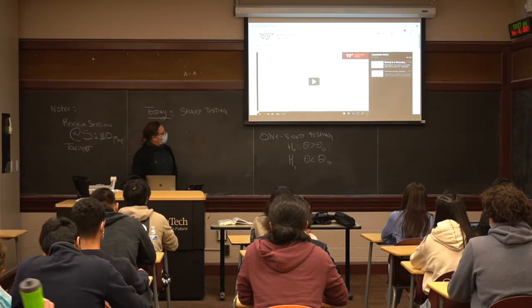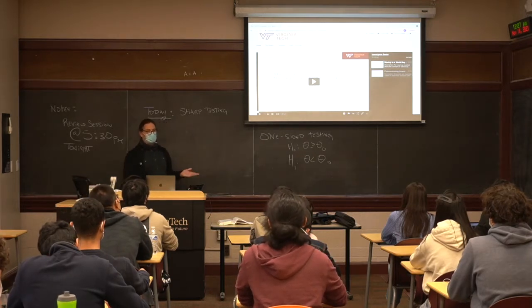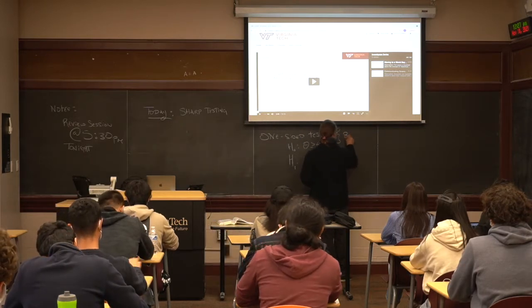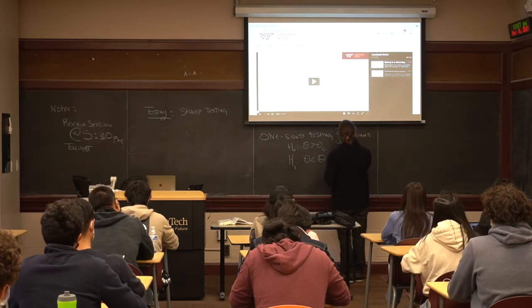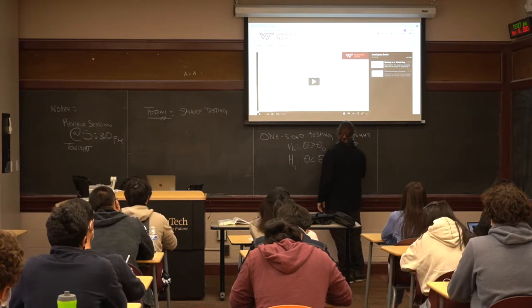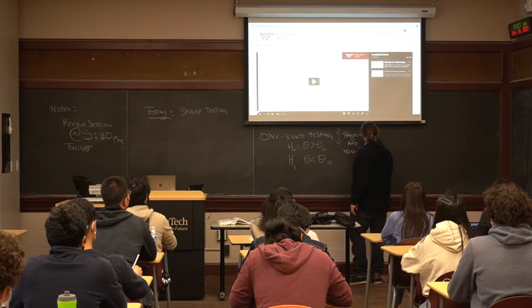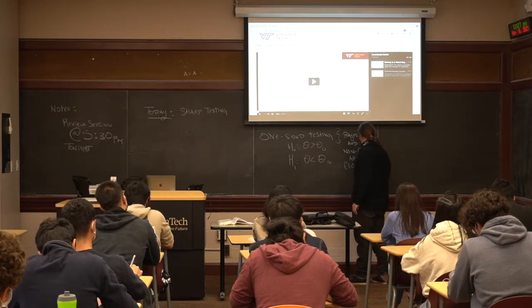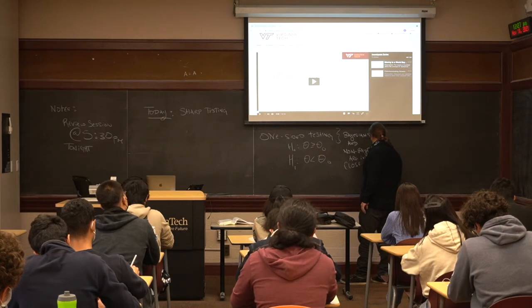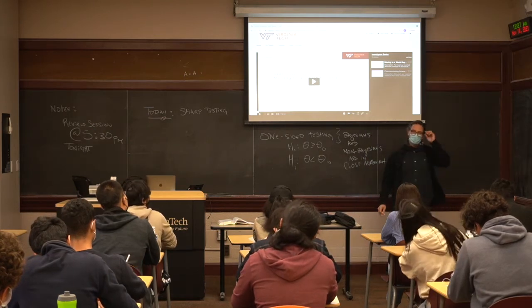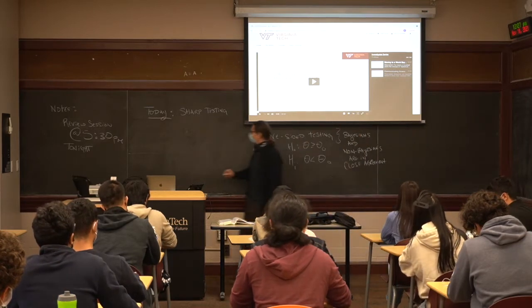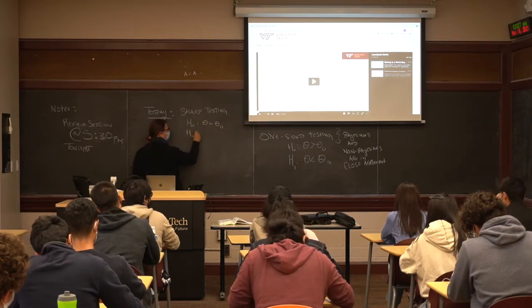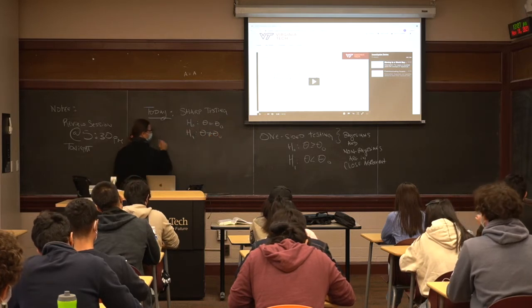There's been a lot of discussion on p-values, and we're going to walk through this real quick. In one-sided testing, there's agreement between Bayesians and non-Bayesians. In sharp testing, H naught theta equals theta naught versus H1 theta not equal to theta naught, there's very little agreement. I would say no agreement.